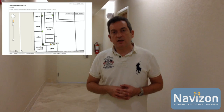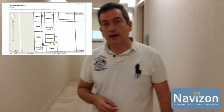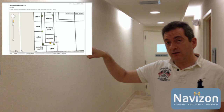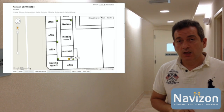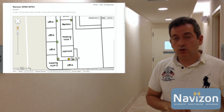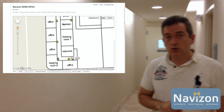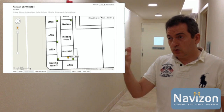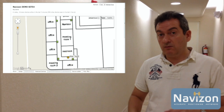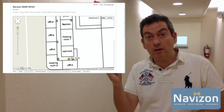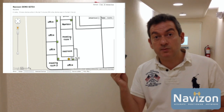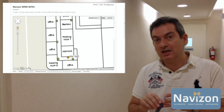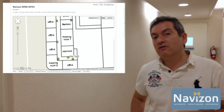Here I am at the end of the corridor. You should see on this side of the screen my location, which is reflected on the user interface. Based on the accelerometer that is built in, the location of the device is stabilizing and getting very accurate.